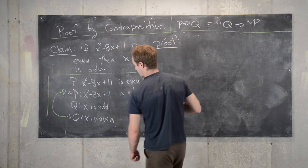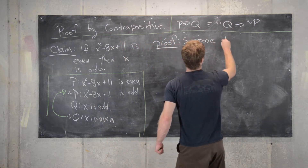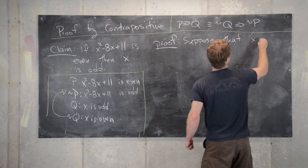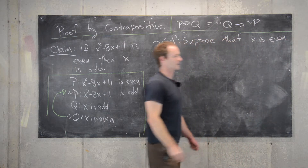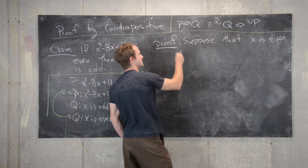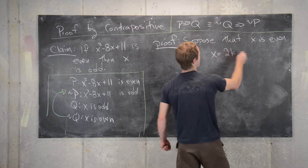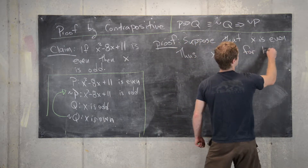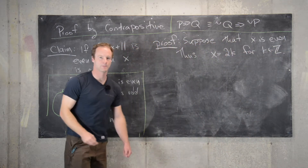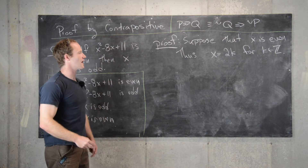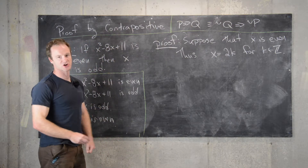Proof. Suppose that x is even. By definition, that means that x equals 2k for some integer k. Now we can plug that value of x into this quadratic expression.